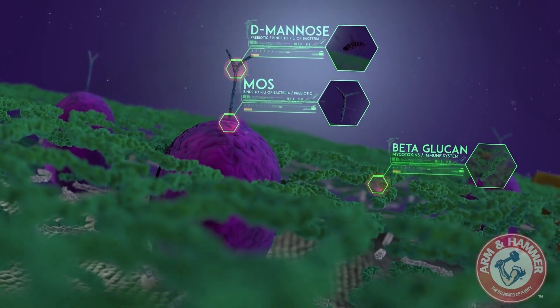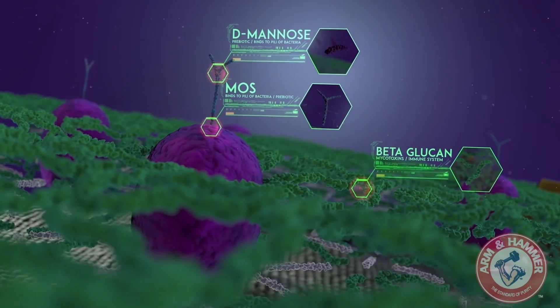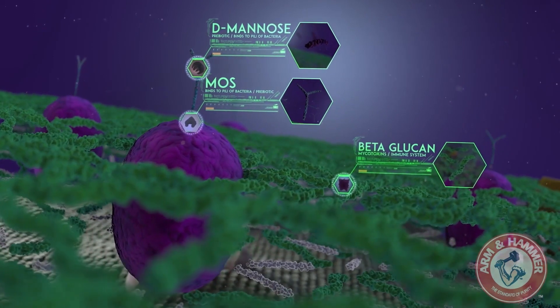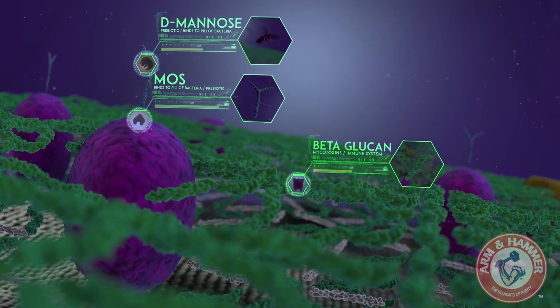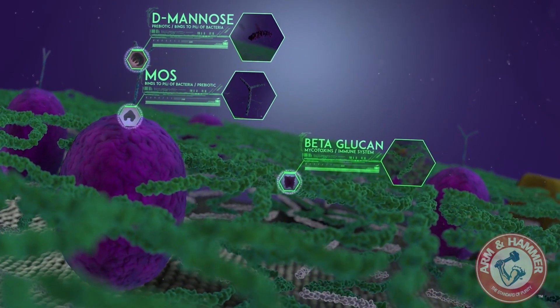However, through enzymatic hydrolysis—precise use of specific enzymes within a controlled environment and concentrations—we can unlock these specific valuable components from the cell wall and make them highly bioavailable.